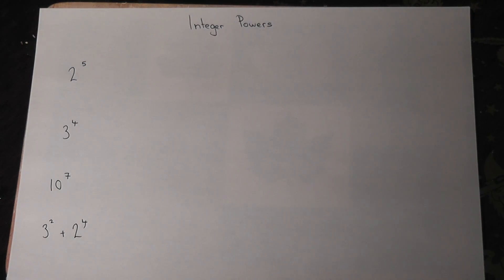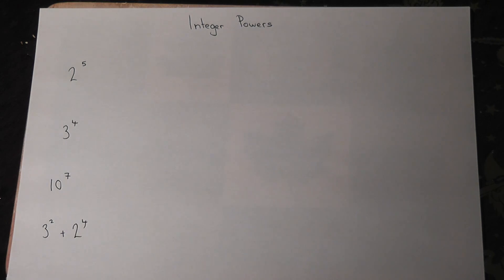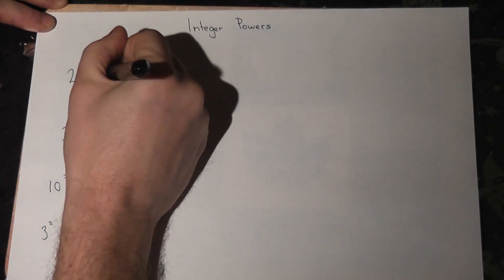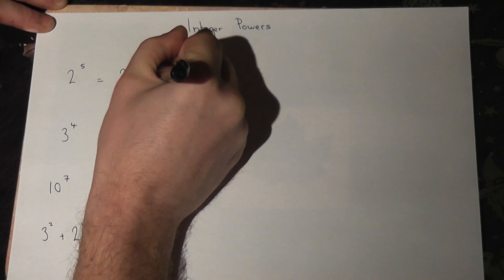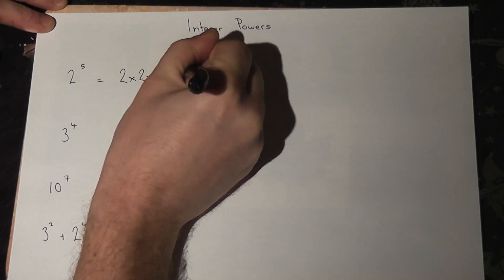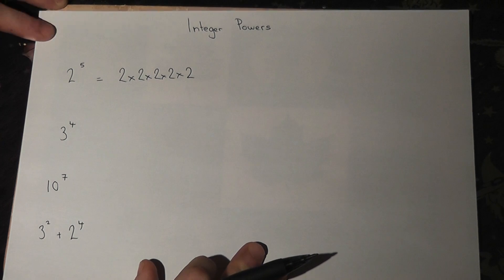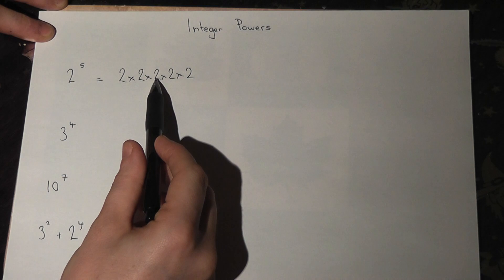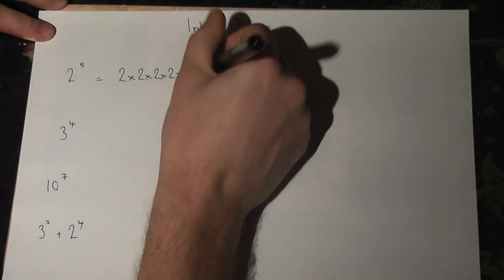This video talks through integer powers. Integers are just whole numbers. If you have 2 to the power of 5, that just means 2 times 2 times 2 times 2 times 2 — there are five twos all multiplied together. 2 times 2 is 4, times 2 is 8, times 2 is 16, times 2 is 32.